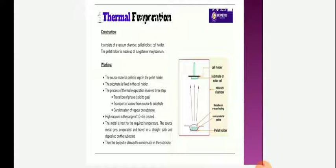Transition of phase solid to gas, transport of vapor from source to substrate, and condensation of vapor on substrate. High vacuum in the range of 10 power minus 4 atmosphere is created. The metal is heated to the required temperature. The source metal gets evaporated and travels in a straight path and is deposited on the substrate.